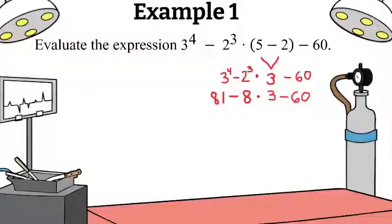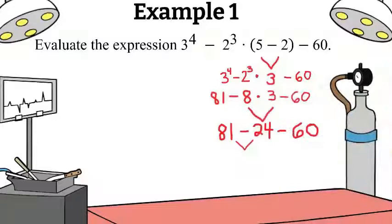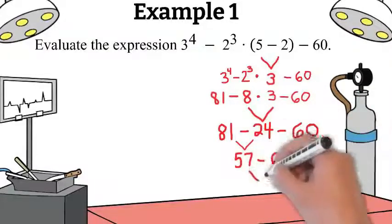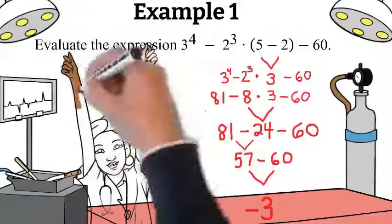Next is multiplication and division. Since we don't have any division, we just need to do 8 times 3. That gives us 24. Write the rest of the expression. We have 81 minus 24 minus 60, which simplifies to 57 minus 60, and that gives us negative 3.